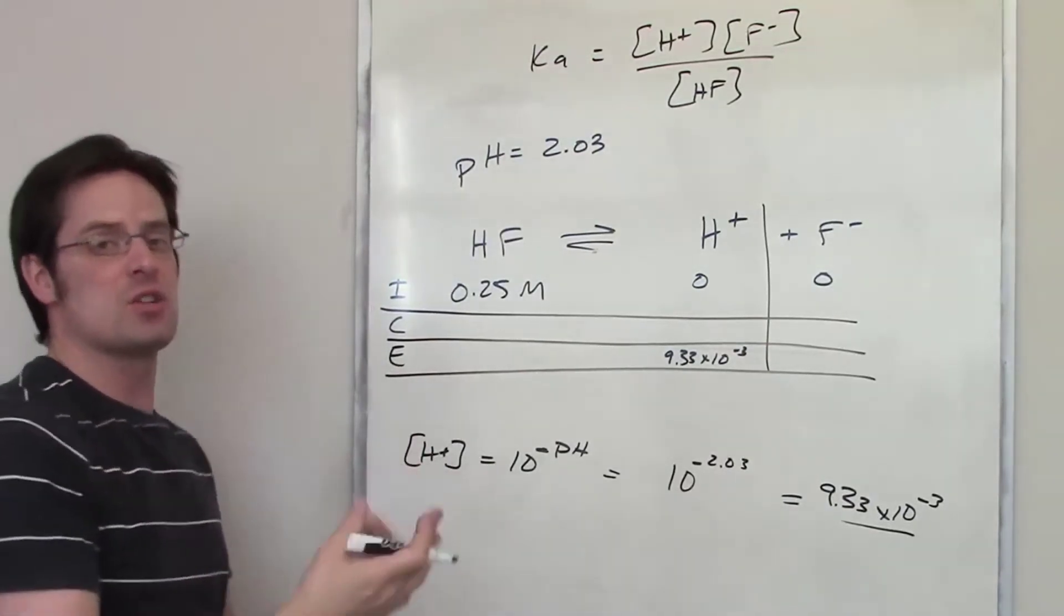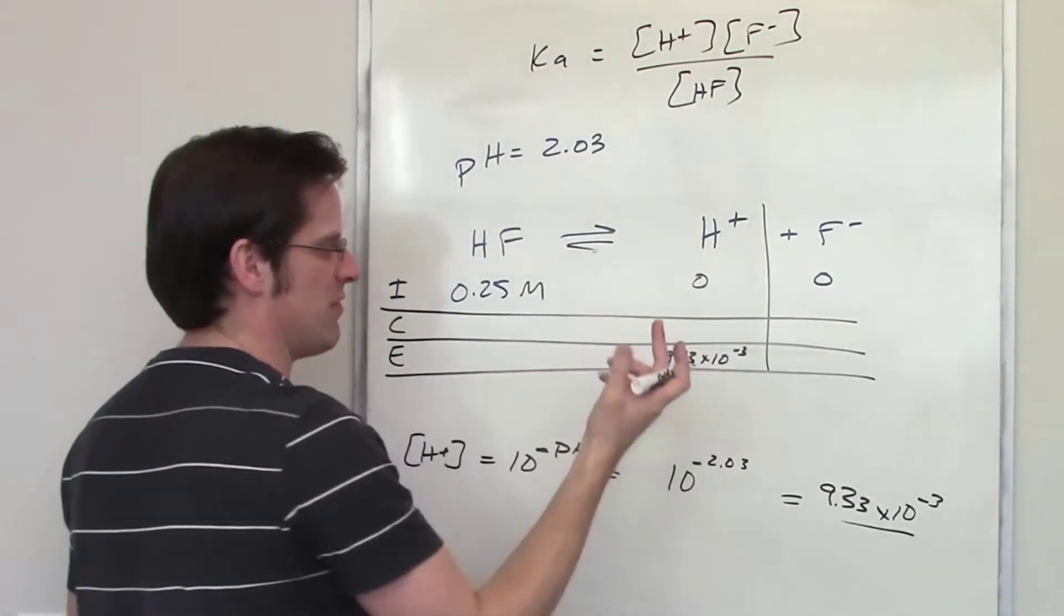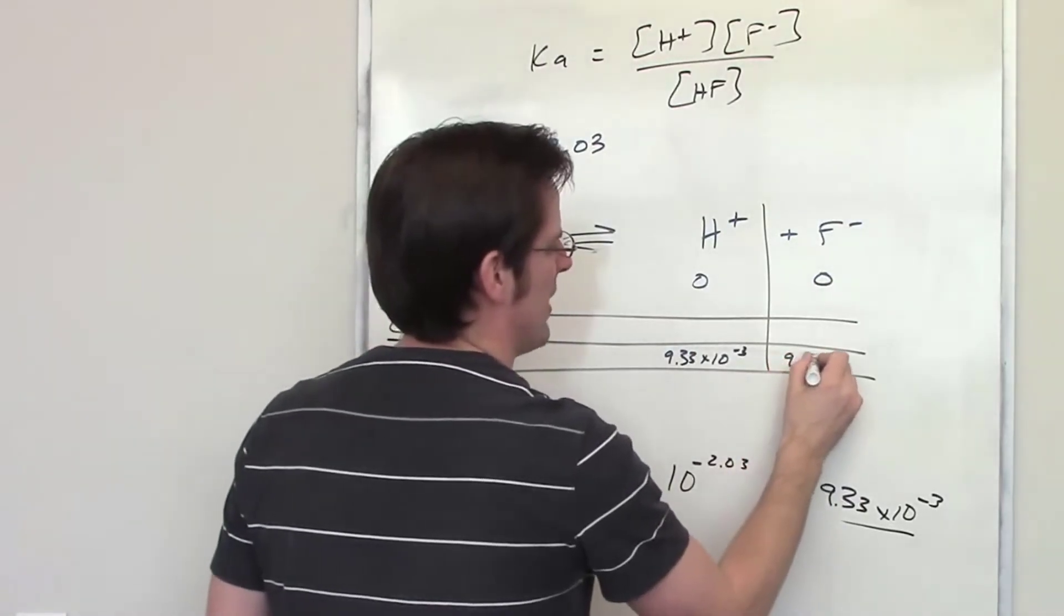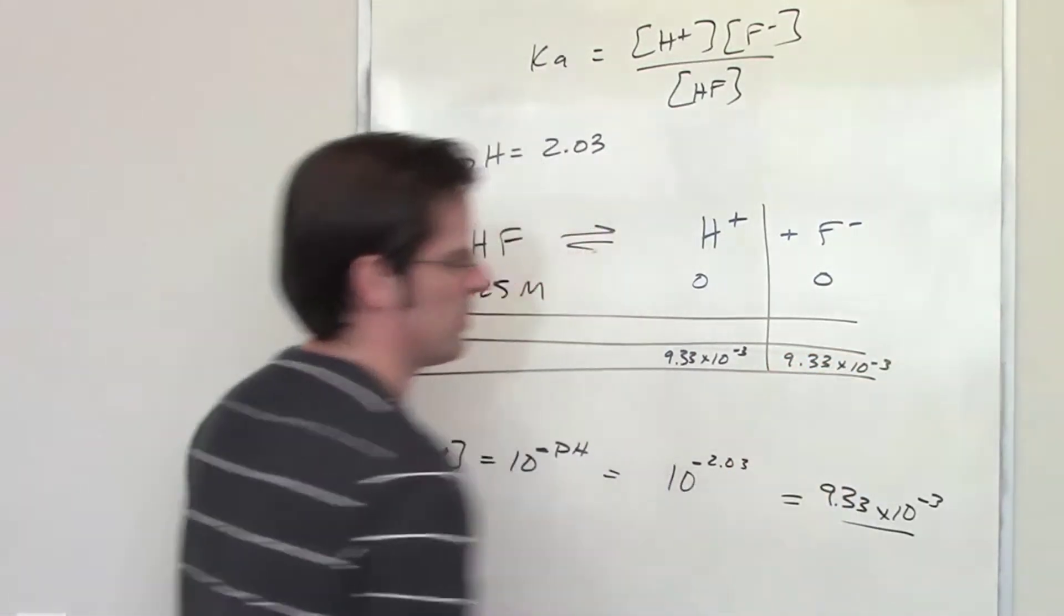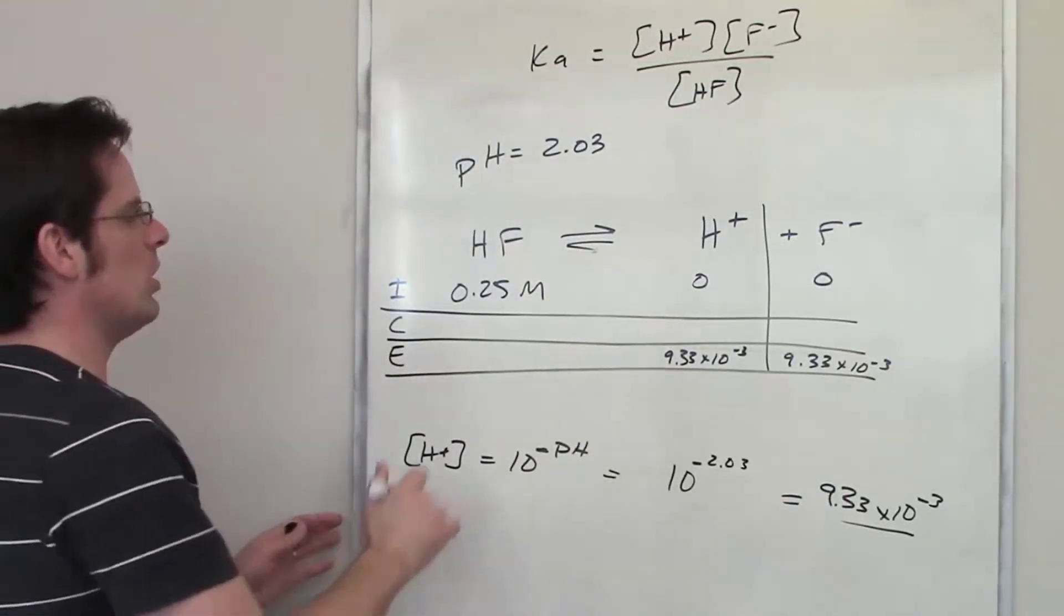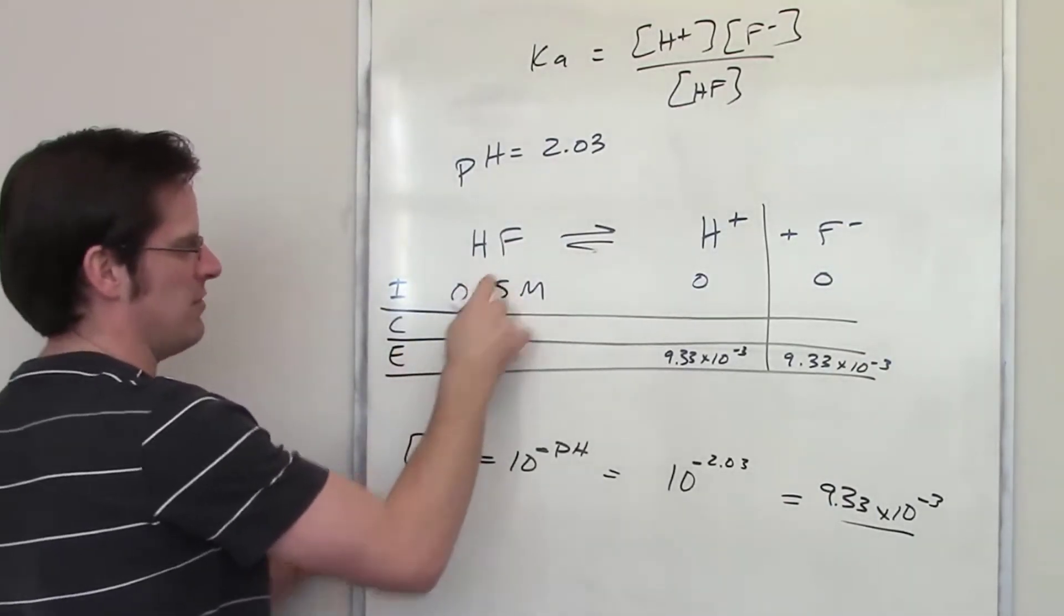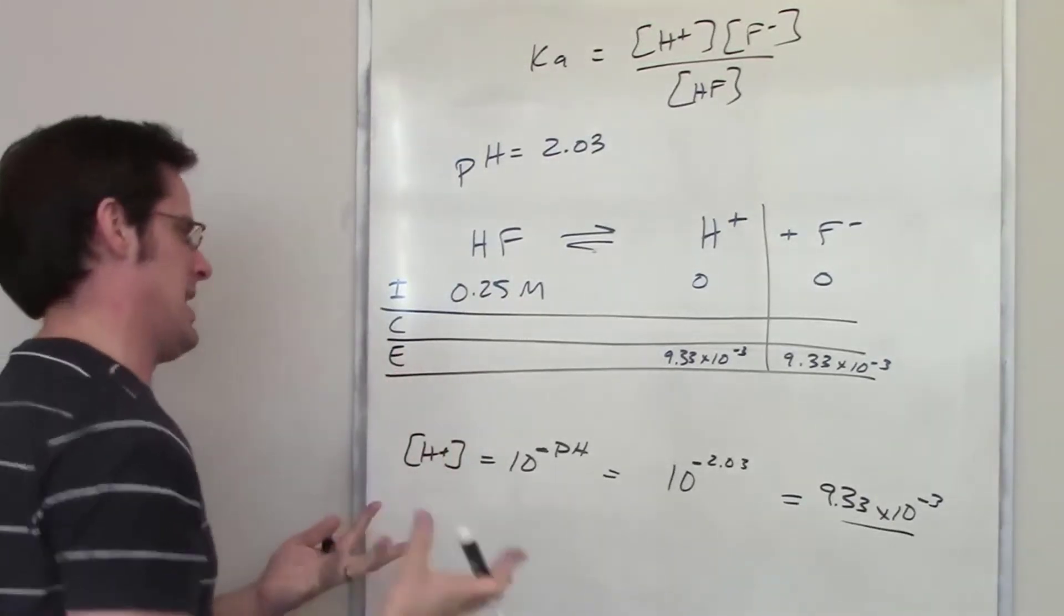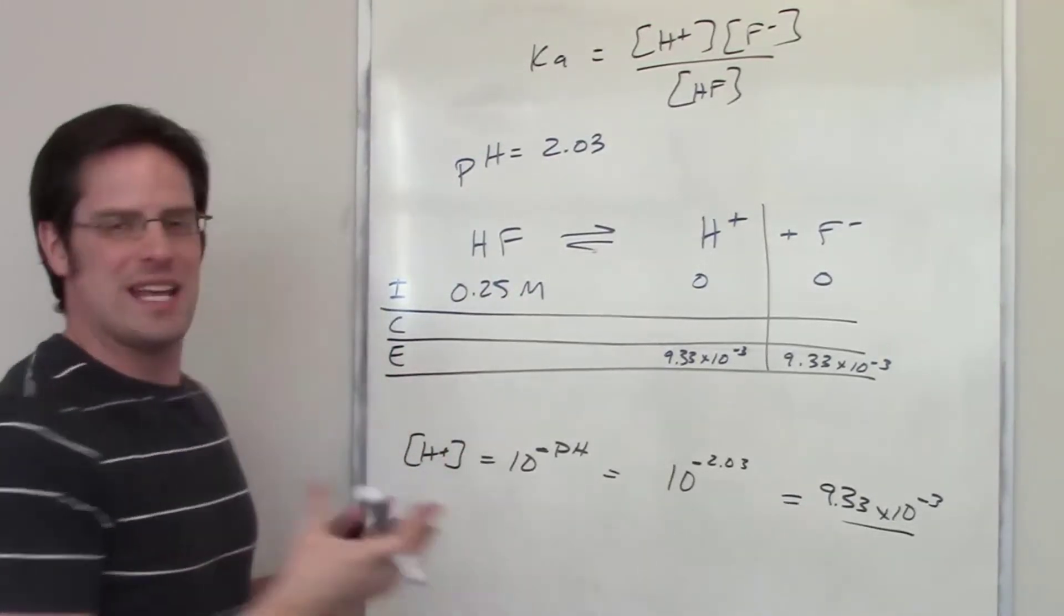Now, because there's a 1 to 1 ratio of H plus to F minus, the final concentration of F minus also has to be at equilibrium 9.33 times 10 to the negative third as well. What in the world is going to be the concentration of HF at equilibrium? Well, I don't know yet. How do I get there?